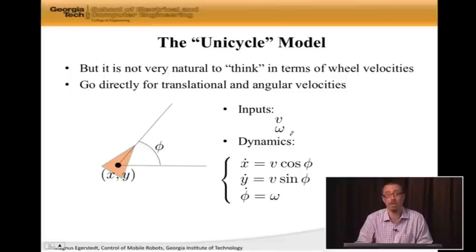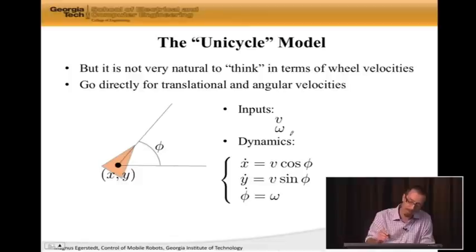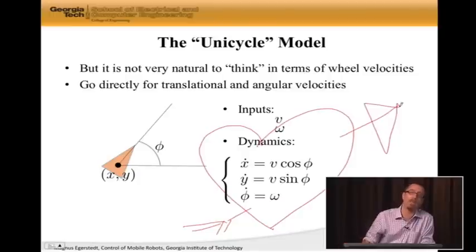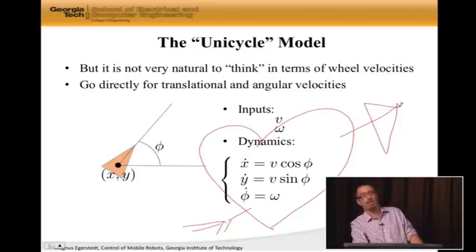Similarly for Y. So Y dot is V sine phi, and phi dot is omega. Because I'm controlling the heading directly, or the rate at which the heading is changing directly. So this model is highly useful. We're going to be using it quite a lot, which is why it deserves one of the patented sweethearts.